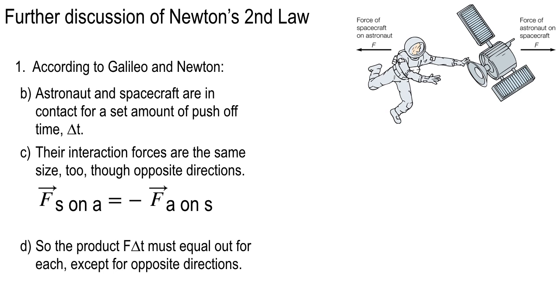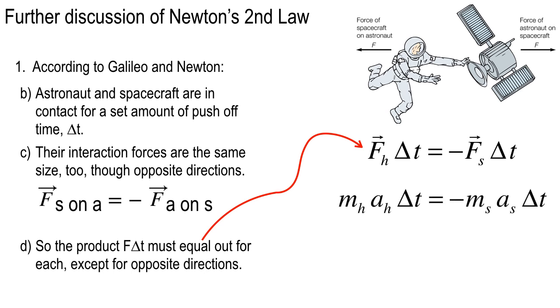The minus sign here is not really a negative sign because it's not a number equation, it's a vector equation. You can say opposite of or opposite direction of. We're going to use that in our derivation here. Those things being the same, the product F delta T has to be equal other than being in opposite directions.